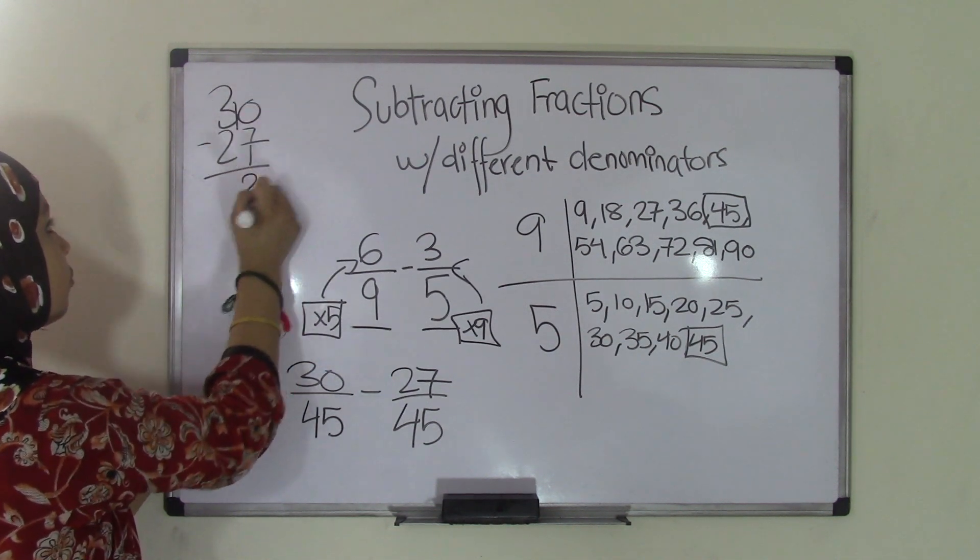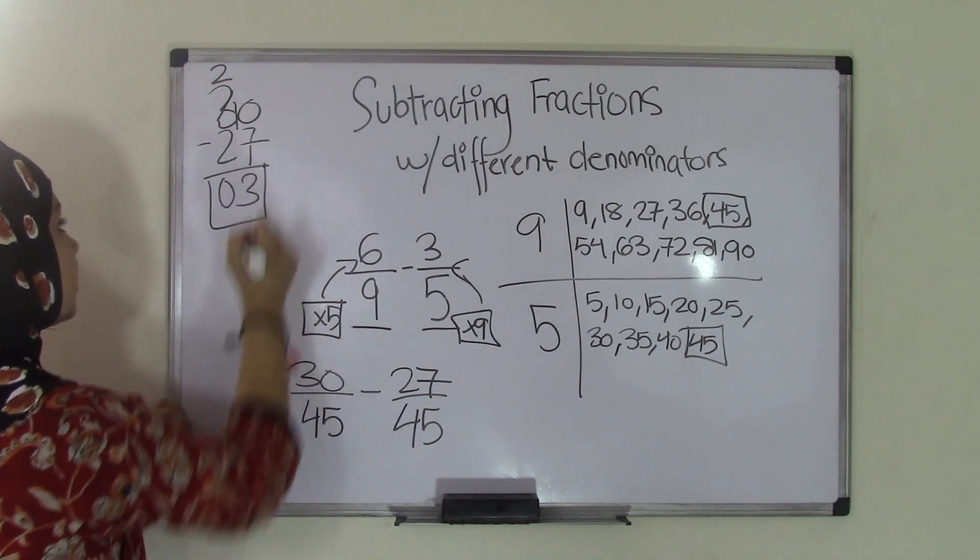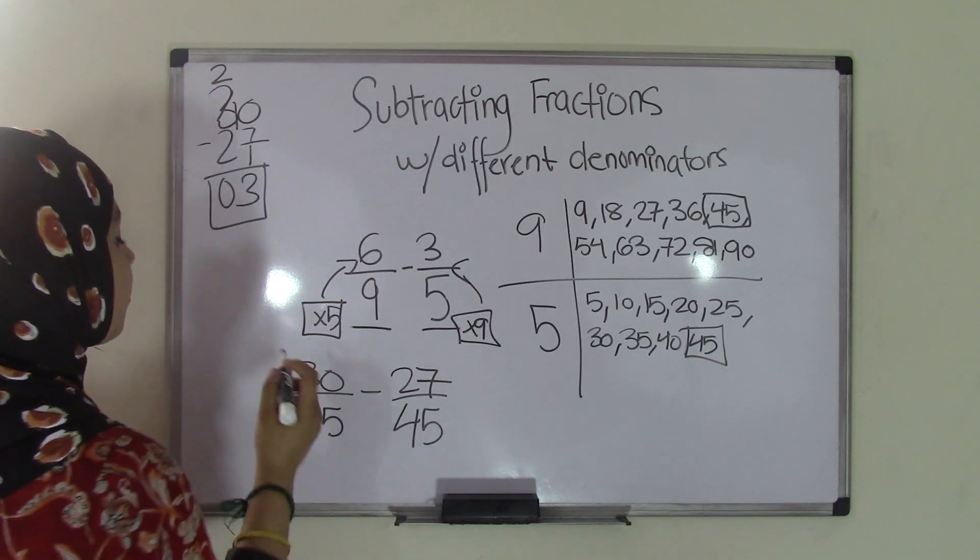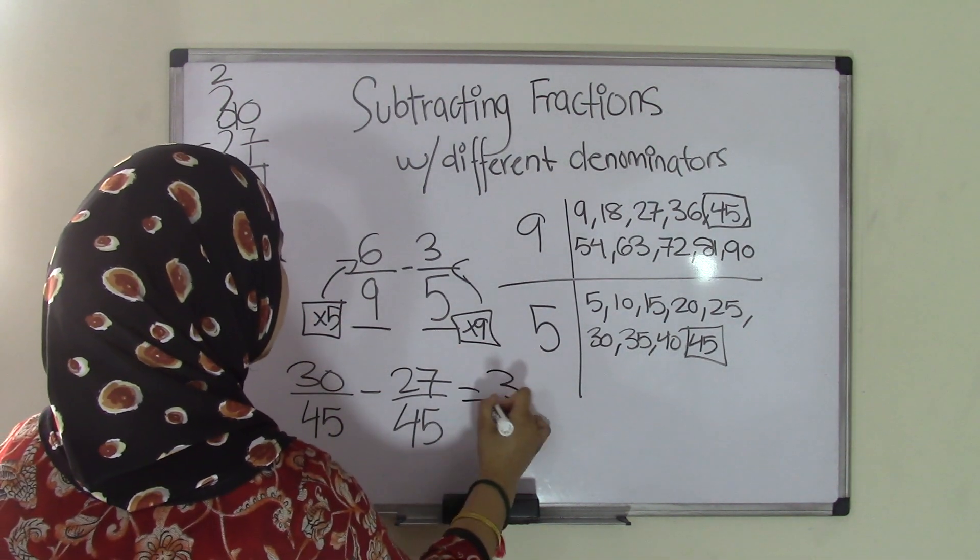You borrow the 1 from there. 10 minus 7 is 3. Since you borrowed 1, that would become a 2. 2 minus 2 is 0. That means the difference between 30 minus 27 is 3. So our difference of 30/45 minus 27/45 equals 3/45.